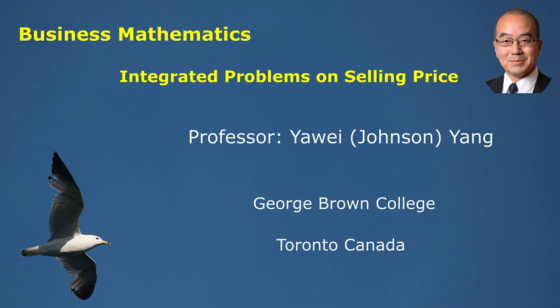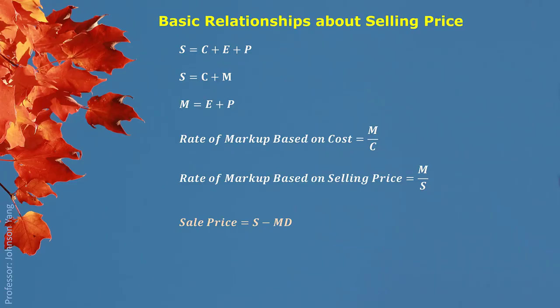Hello everyone. After we learned price structure, here we explain some integrated problems on selling price. Here are the basic knowledge we learned before. Selling price is expressed as cost of buying, operating expenses, and expected profit. It can also be expressed as cost of buying and markup, where markup is expenses and profit together.